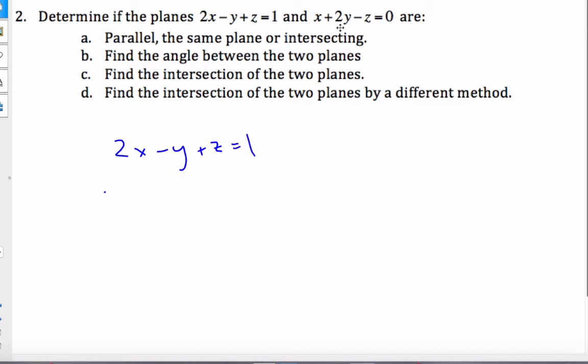I want to find the intersection of these planes. If I do simultaneous equations here, I'm going to try to eliminate a variable. I have x + 2y - z = 0. I can add these equations up and I get 3x + y = 1. Now I have one equation, one variable.